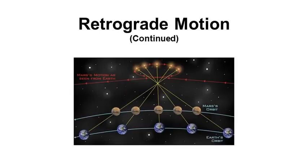Retrograde motion is the apparent motion of a planet when, viewed from Earth, the planet appears to move backwards.